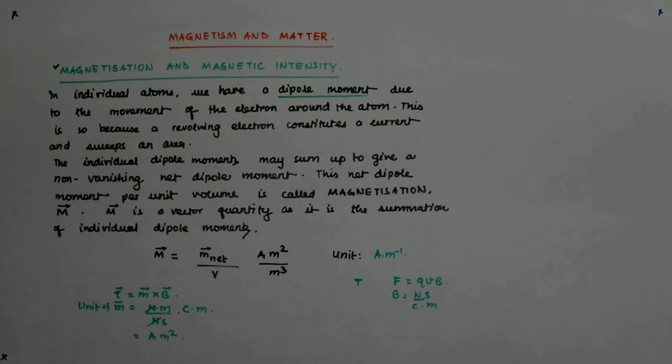So unit of it is ampere per meter. That is how I define magnetization. Now once you understand this, we can go ahead to define the magnetic intensity.